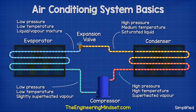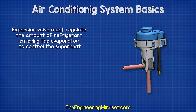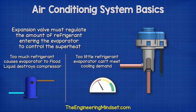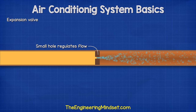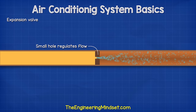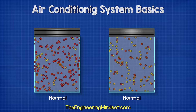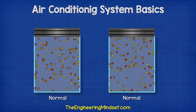The refrigerant therefore exits as a high pressure, medium temperature, saturated liquid, and this heads to the expansion valve. The expansion valve needs to regulate the amount of refrigerant entering the evaporator to control the superheat. If it allows too much refrigerant to flow, it can flood the evaporator, so the refrigerant doesn't evaporate and liquid reaches the compressor and possibly destroys it. But if it lets in too little refrigerant, the system won't provide enough cooling, and so it operates inefficiently. The expansion valve regulates the refrigerant by only allowing it to pass through a small hole. This creates a large pressure difference across the valve — one side is the high pressure liquid, the other side is almost empty. The small hole causes it to almost spray into the evaporator as a part liquid, part vapour mixture. The refrigerant will expand to try and fill the empty space on the other side, and this will cause it to drop in pressure as well as temperature.